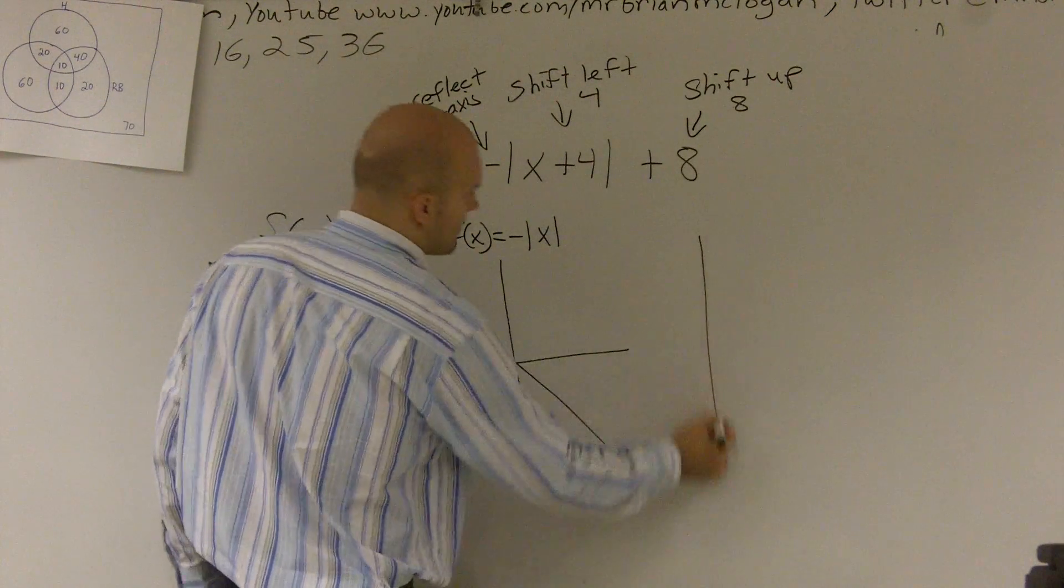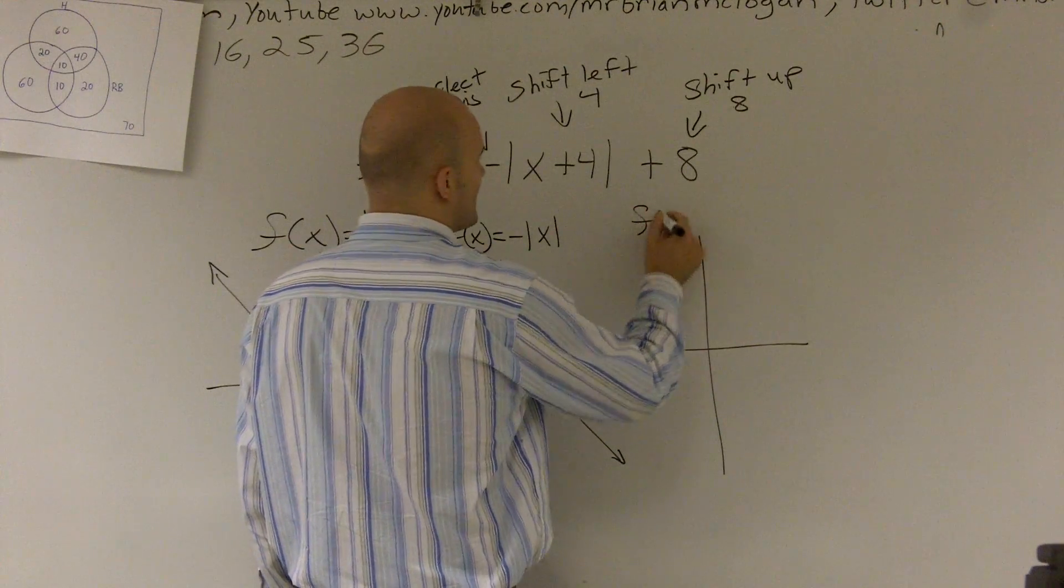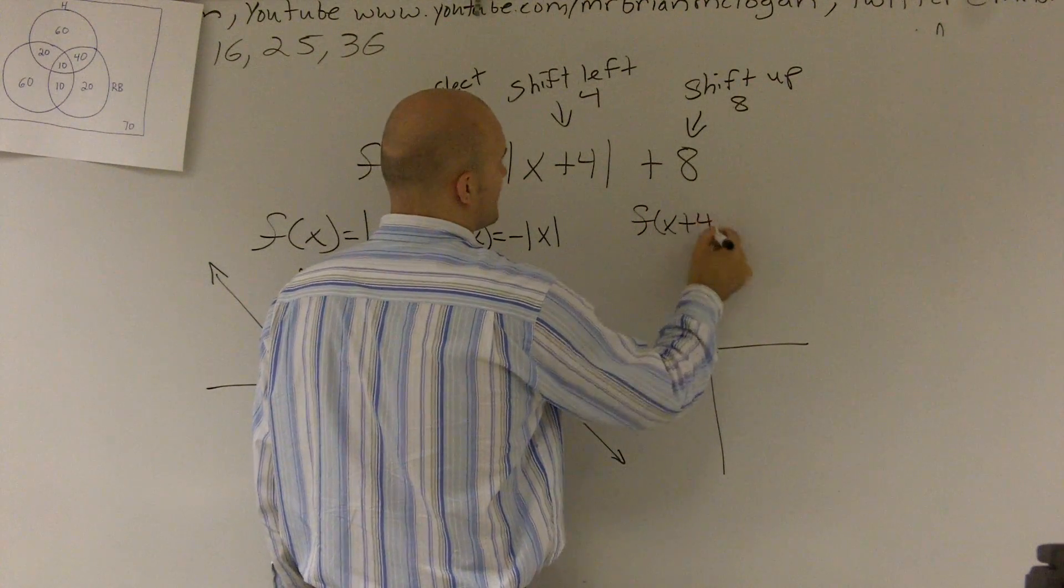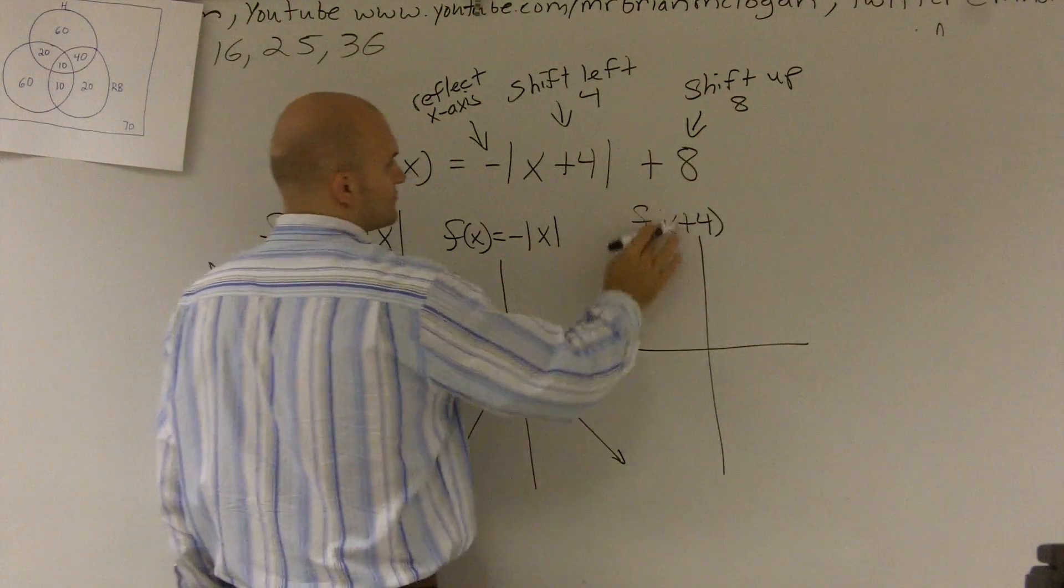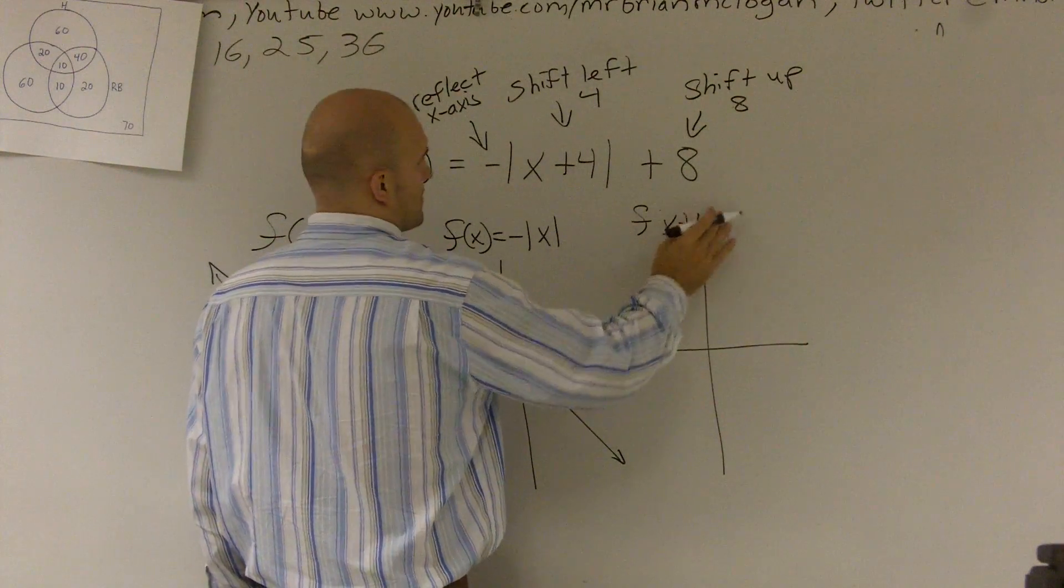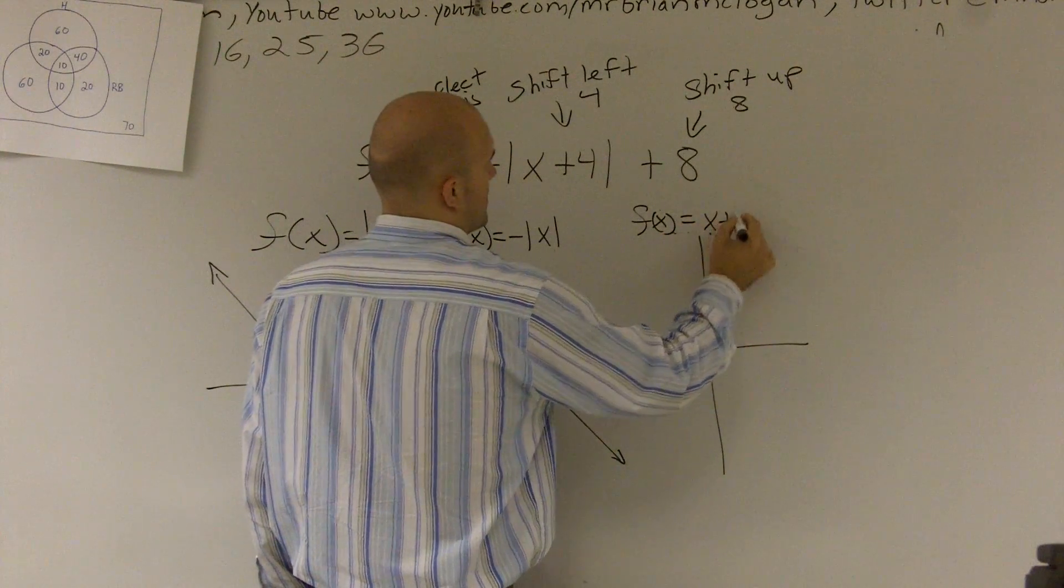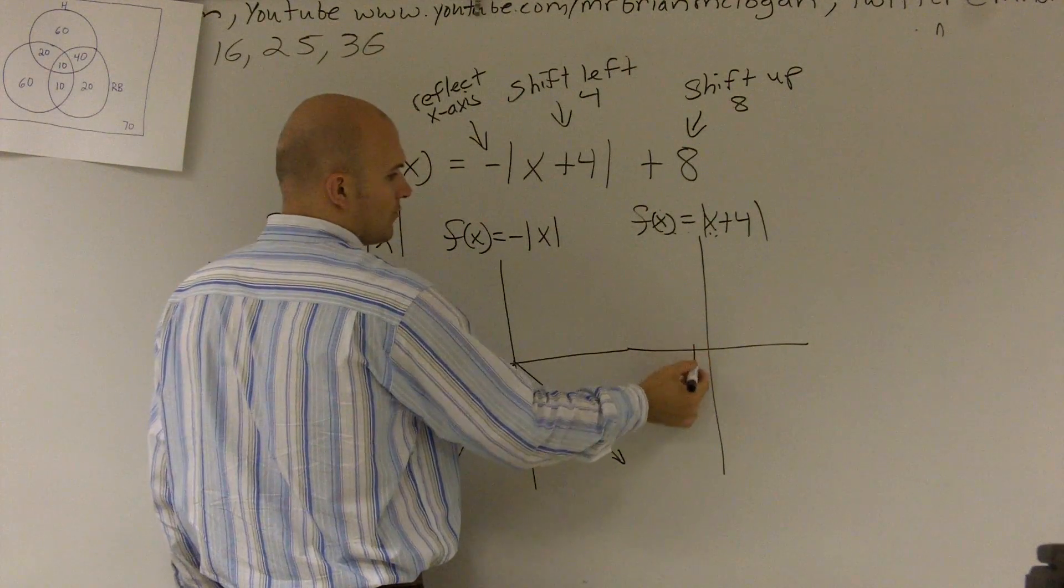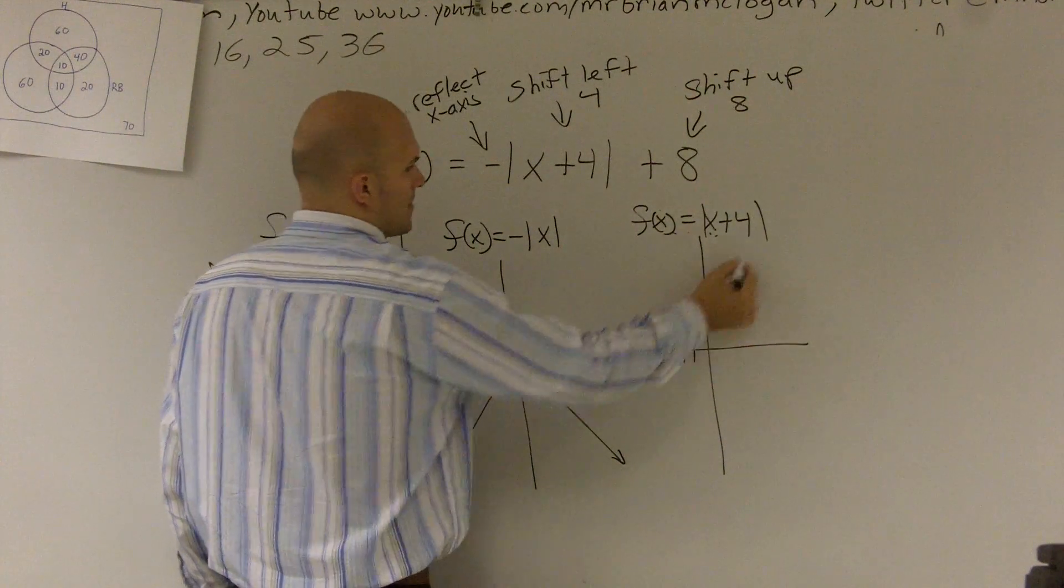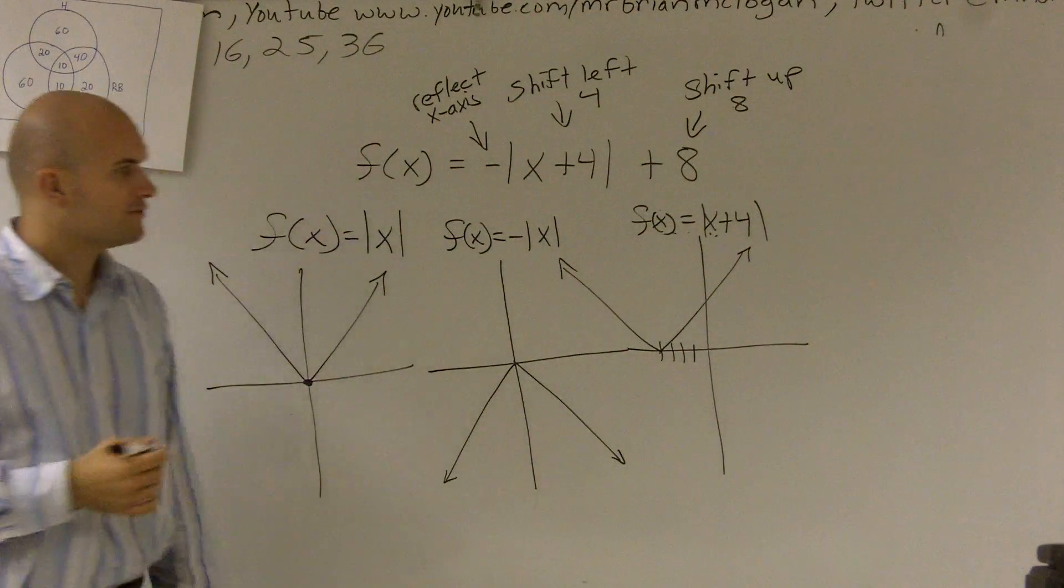Then, if I was going to do f of x plus 4, that's going to shift all my x coordinates. That's going to shift all my x coordinates over 4. 1, 2, 3, 4. So it's still the same graph, but now it's been shifted over 4.